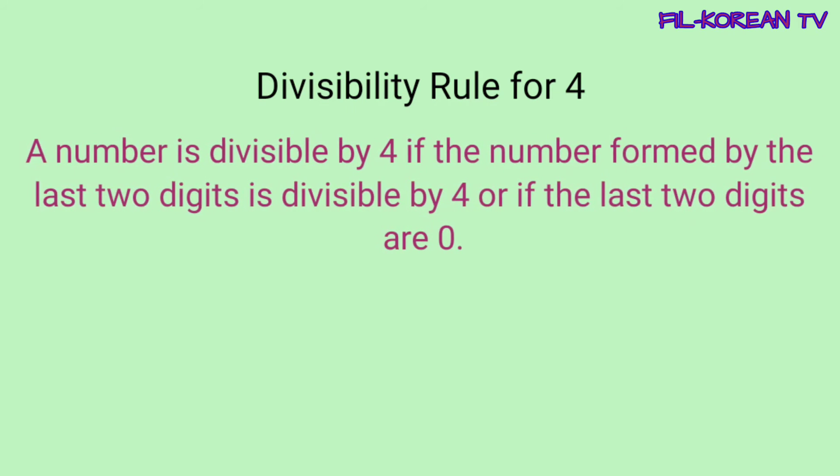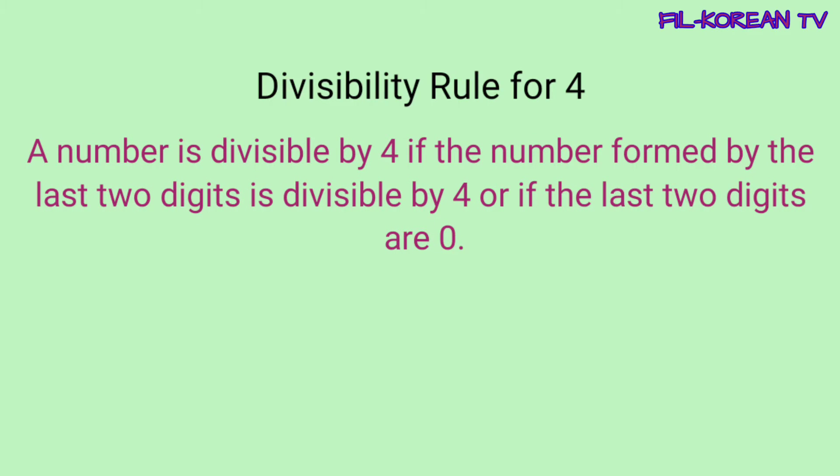Let's start with the divisibility rule for 4. A number is divisible by 4 if the number formed by the last two digits is divisible by 4, or if the last two digits are 0.